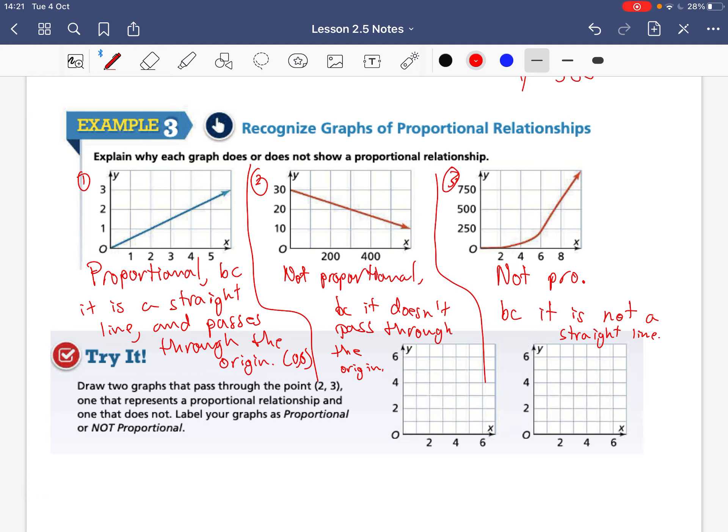So draw two graphs that pass through two comma three, one that represents a proportional relationship and one that does not. Label your graph as proportional or not proportional. So what I would like you to do is go ahead and do this on your own and then I will check this next time we're in class or better yet compare your graphs with your classmate next class and check with your partner. All right that's all I have, have a great day bye.